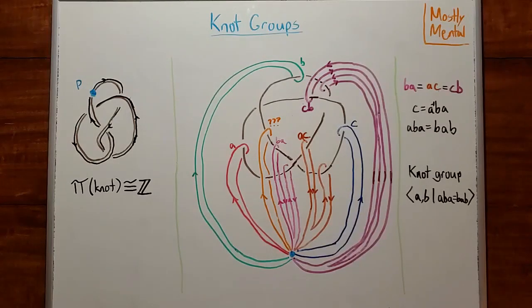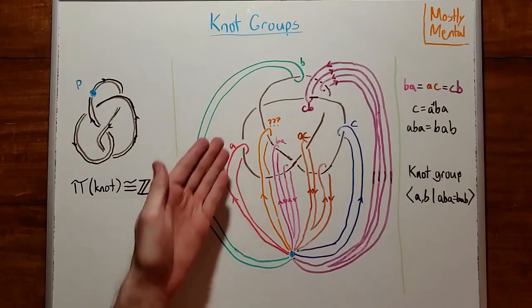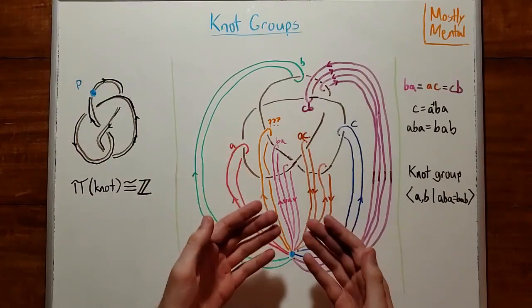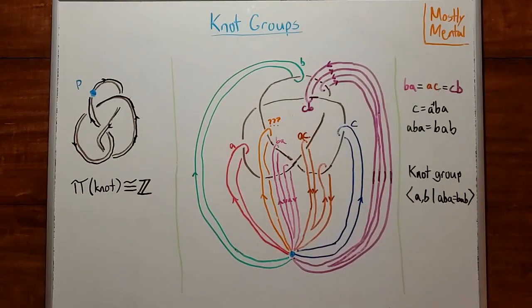Okay, then what can we do to get useful information? The trick is to look at the fundamental group, not of the knot itself, but of the space around it, the complement of the knot. And what we end up with is known as the knot group.